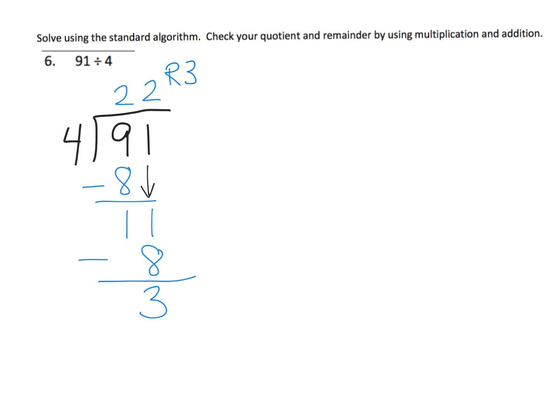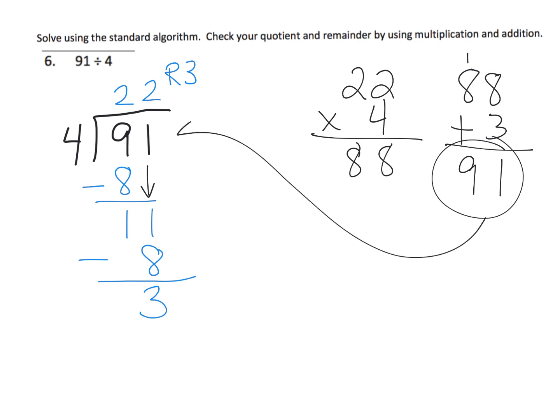So how can we check it? Well, we're going to take that 22, the quotient. We're going to multiply by 4, the divisor. 4 times 2 is 8. 4 times 2 tens is 8 tens. So we end up with 88. And then 88 plus the remainder, which was 3, that gives us 91. And because 91 is what we started with, we're probably correct.